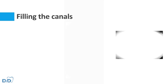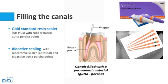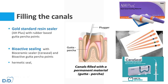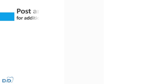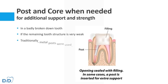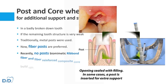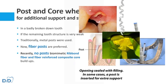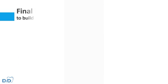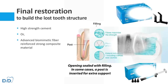Once the canals are cleaned, they will be filled using gold standard resin sealer or bioceramic sealer and gutta percha points. In badly broken down teeth, a post and core may be indicated for additional support and strength of the tooth. In such cases, fiber posts or ribbon fibers will be used. Finally, the whole tooth will be built up using high-strength cement or advanced biometric fiber composites.